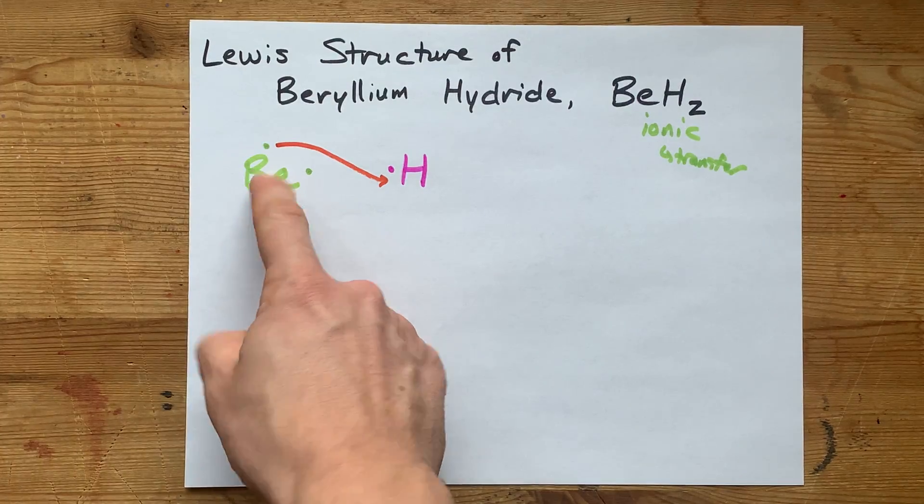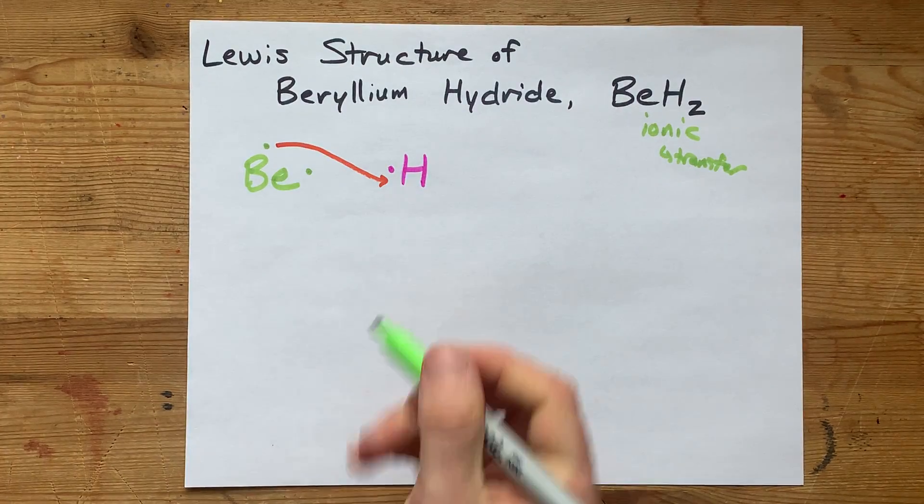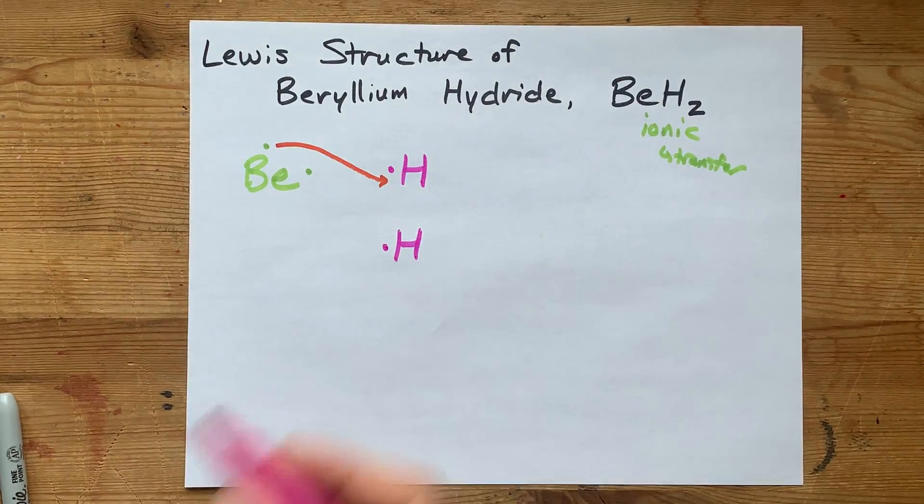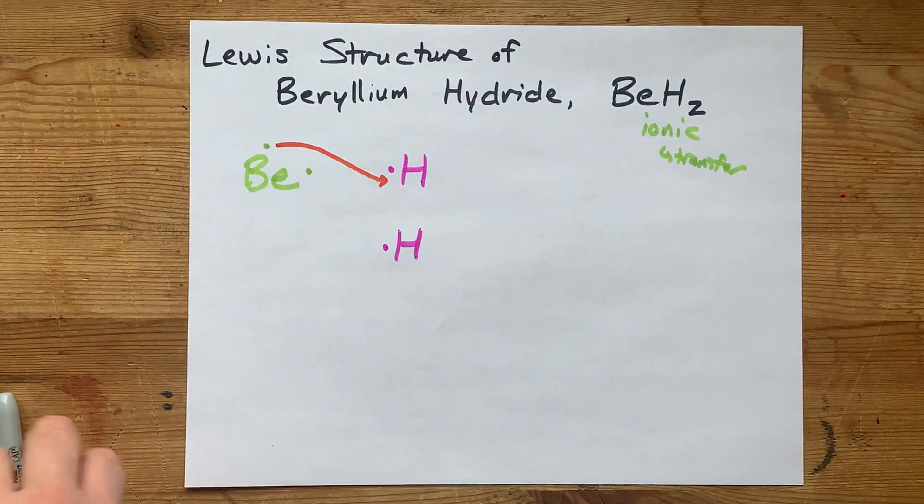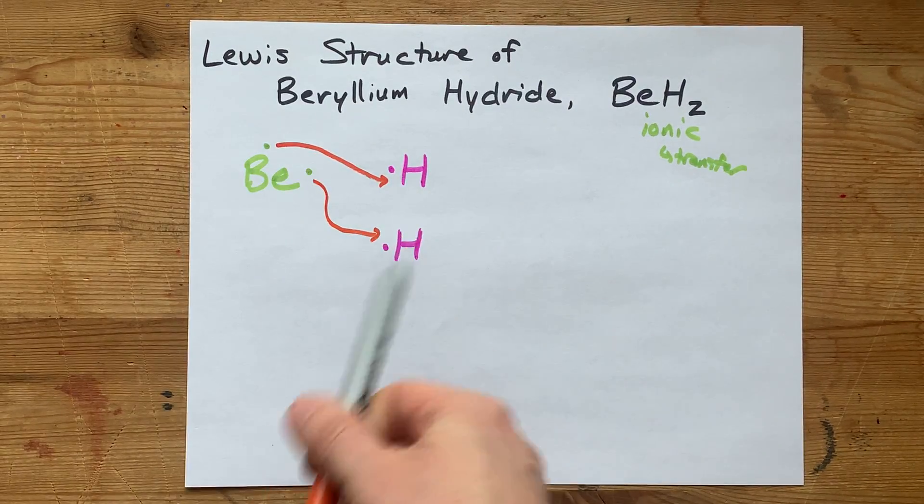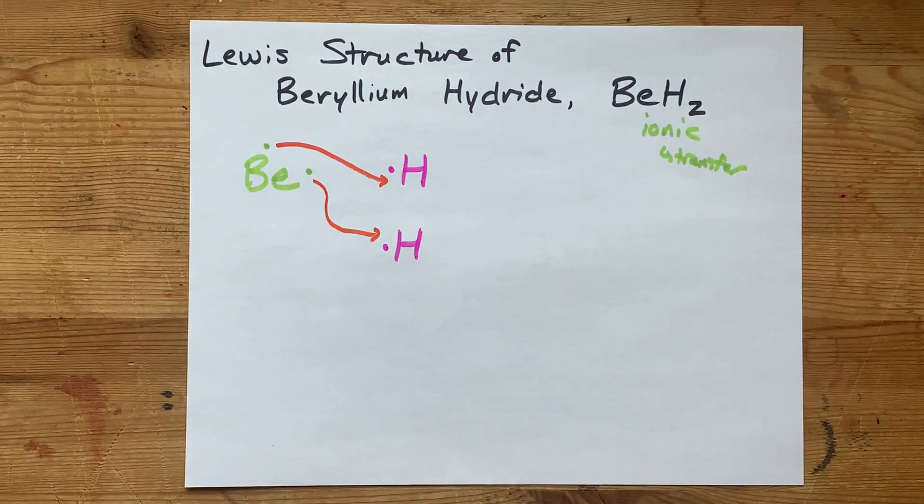So what can this Be do with its extra valence electron? Well, the answer is a second hydrogen with its 1 electron will happily accept that other electron. Now Be has given away both of its electrons.